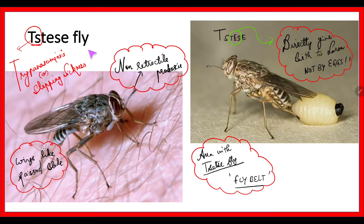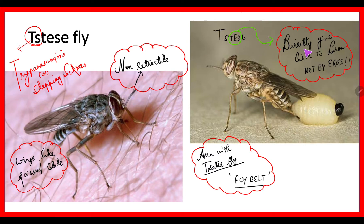Next is the tsetse fly, which has names like 'T' and 'S.' It causes trypanosomiasis, or sleeping sickness. It has wings folded like scissors. The most important distinguishing feature between house fly and tsetse fly is the proboscis — house fly has a retractable proboscis, whereas tsetse fly has a non-retractable proboscis. Another important point is that the tsetse fly directly gives birth to larvae, not eggs. The area where it is present is called the 'fly belt,' and it is usually seen in the African region.